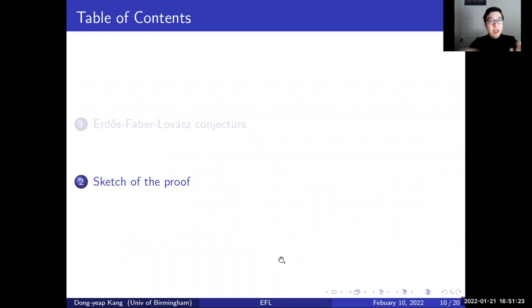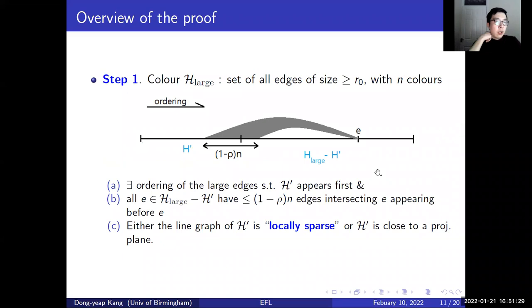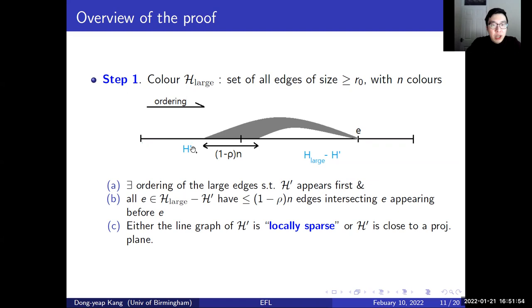For the remaining time, I will briefly sketch the proof of our result. In the very beginning of the proof, we try to color all edges of size at least some large constant R₀ with n colors, and let H_large be the set of all such edges. To do so, we construct a certain ordering of the edges in H_large so that the edges of H' appear first in this ordering, and for all other edges E outside of H', they have at most 1 minus R₀ edges intersecting E appearing before E.